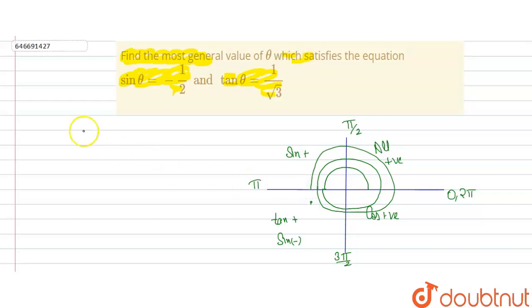So angle will lie somewhere here. So 5π plus θ, which is the general term, can be written as (2n + 1)π plus θ.